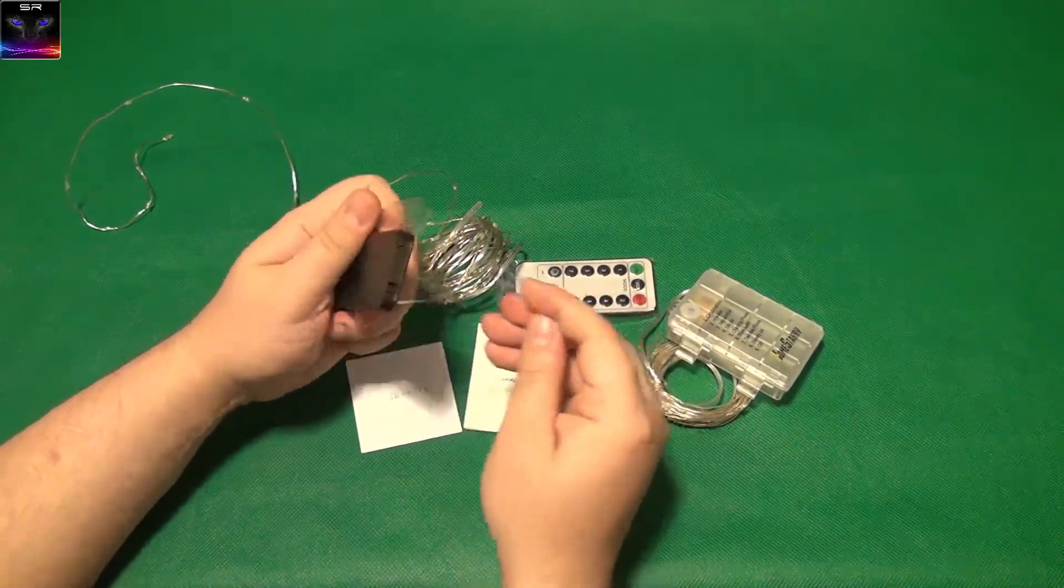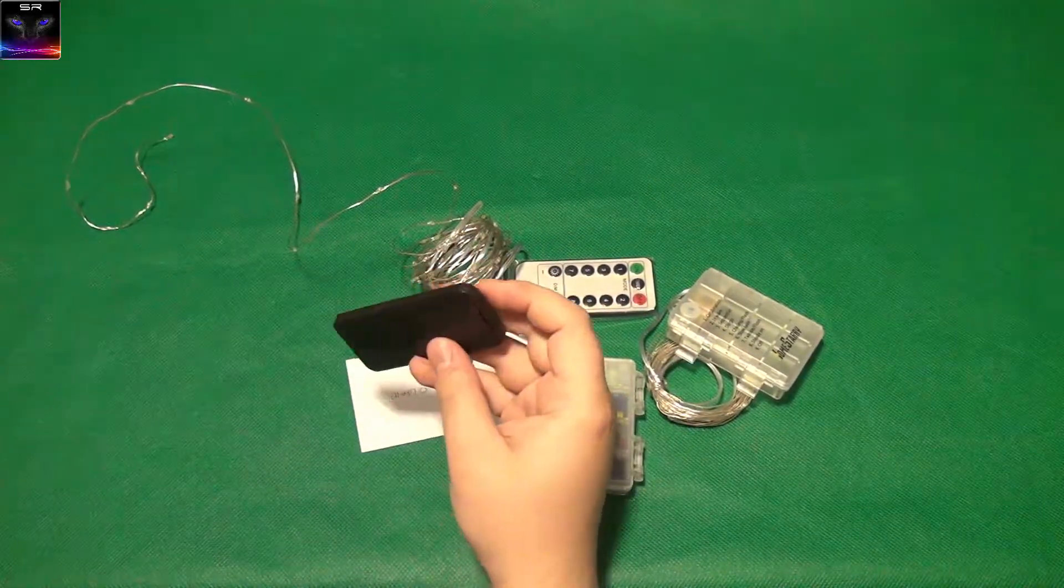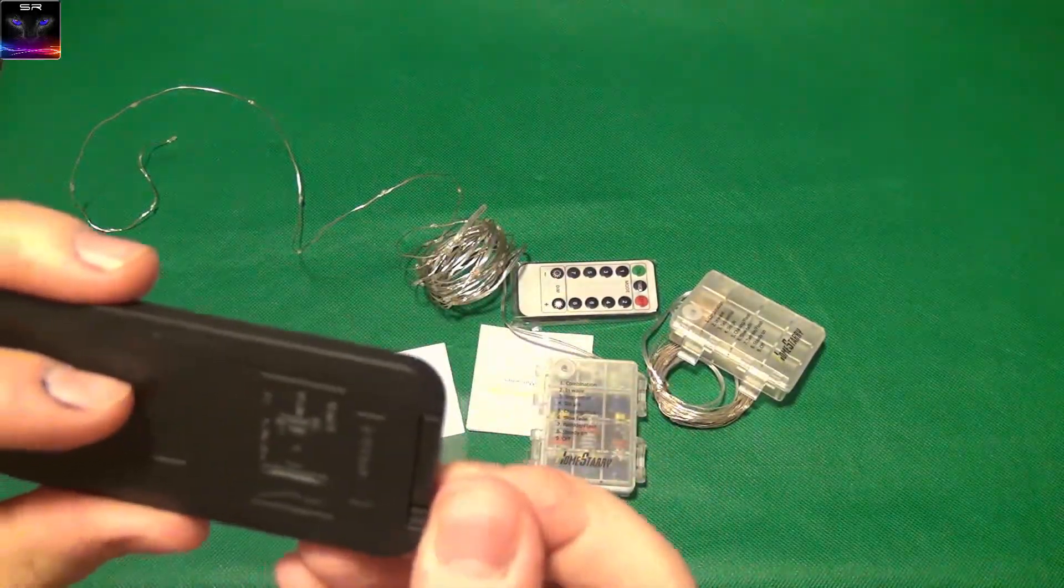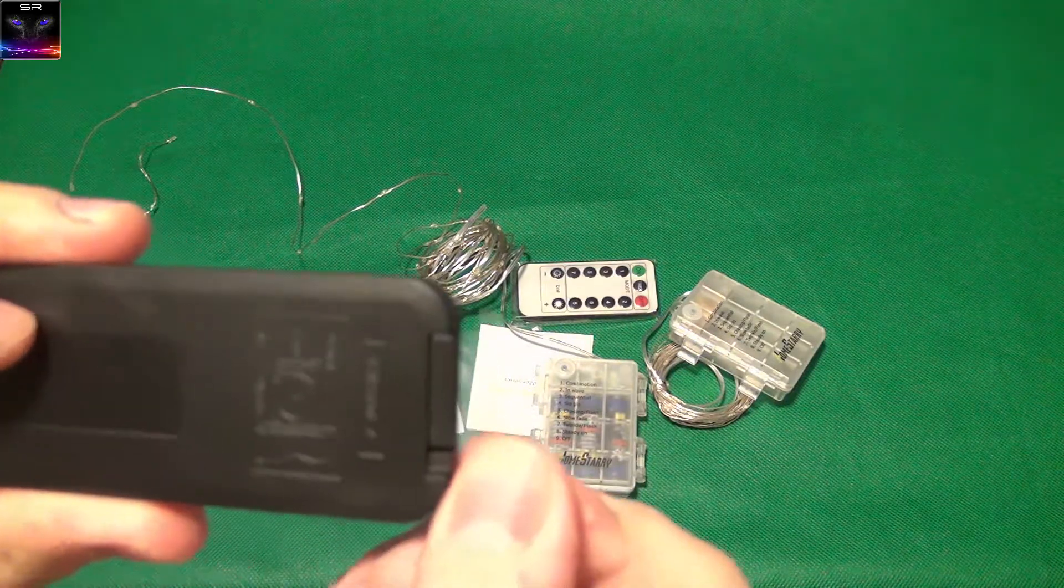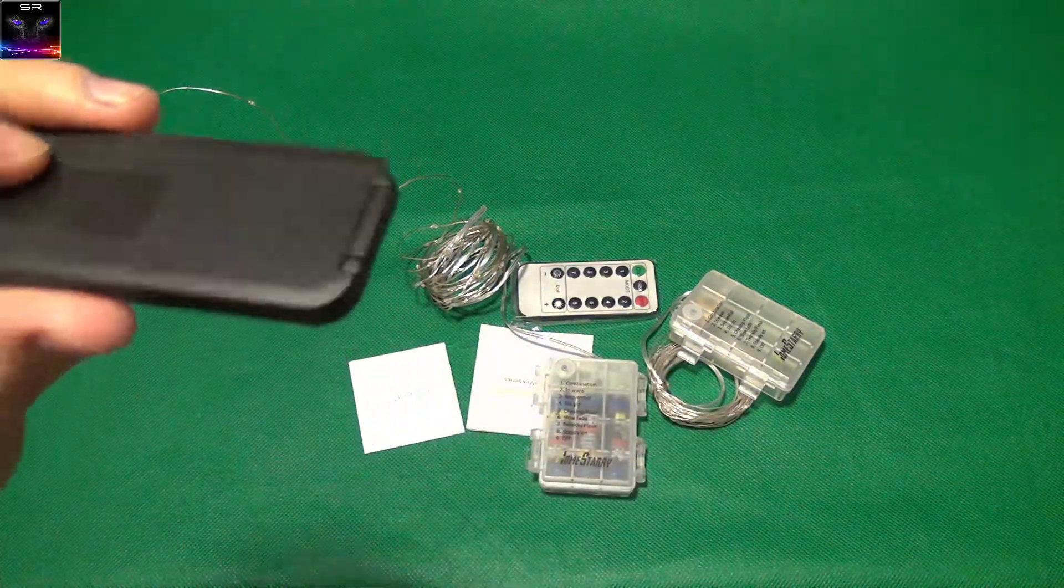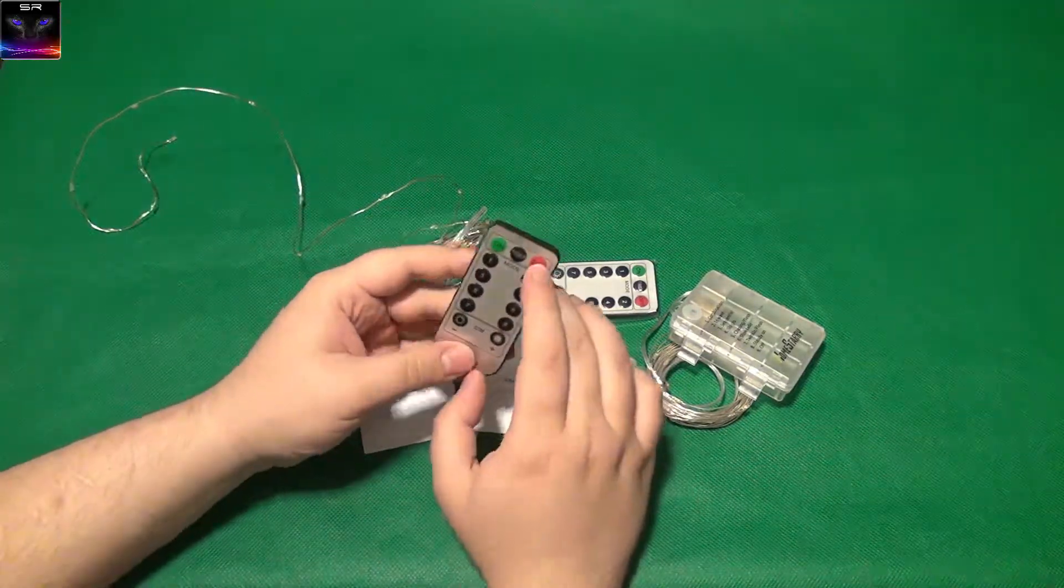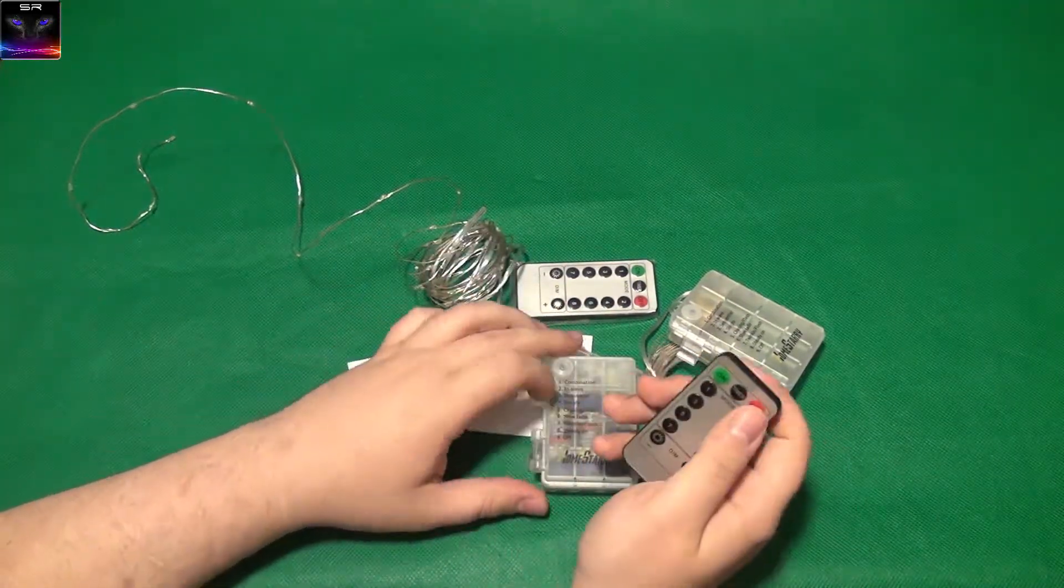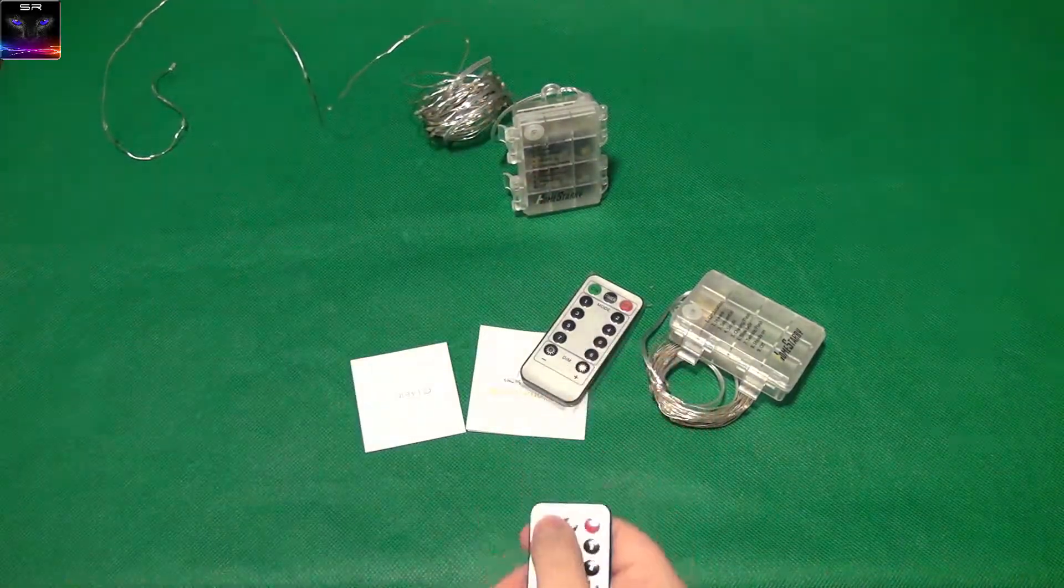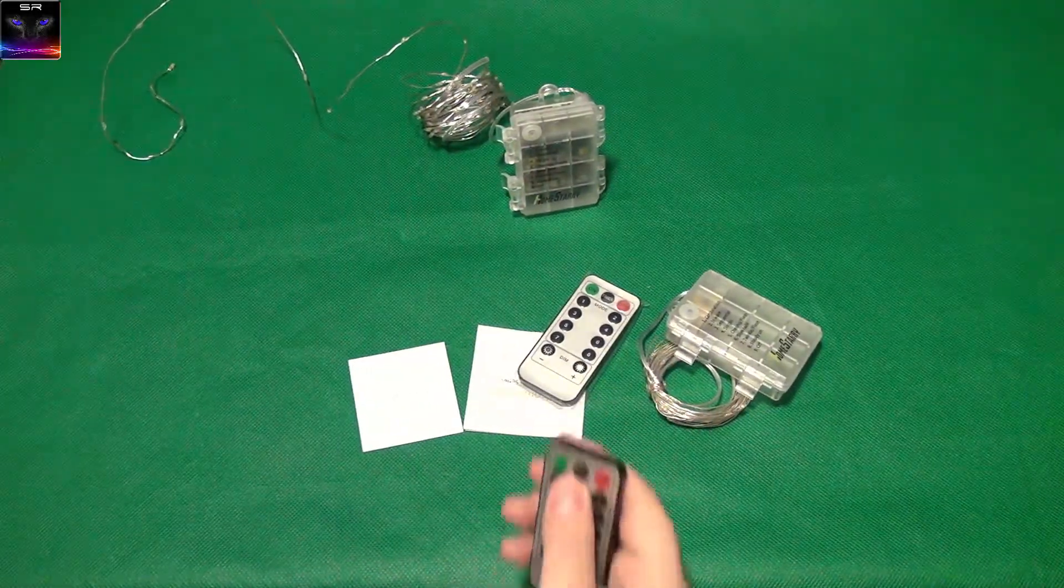Let's open the remote up. All the remotes usually come with this kind of thing. See that? That's between the battery contact, so you have to pull this out. That's just to prevent the battery from going flat because there's this kind of trickle charge.